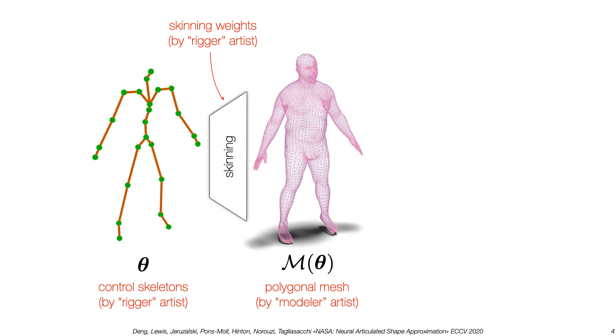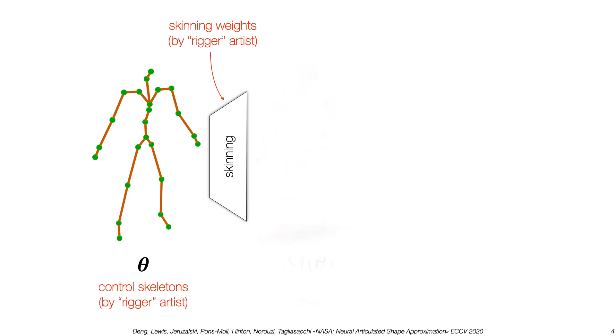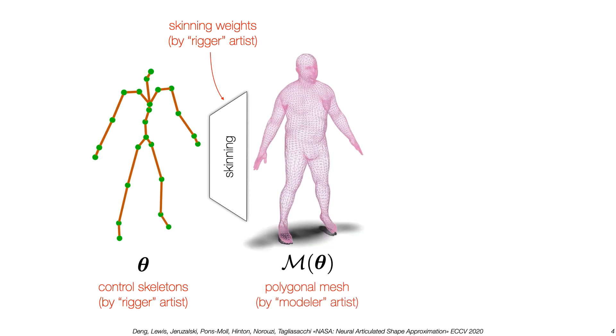In contrast, traditional 3D digital humans are represented by a controlled skeleton defining the structure of motion, a polygonal mesh defines the surface, and skinning weights that bind motions to the surfaces. All of these are designed by artists.